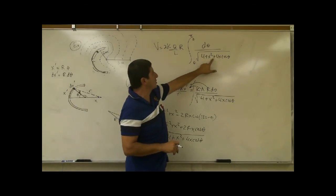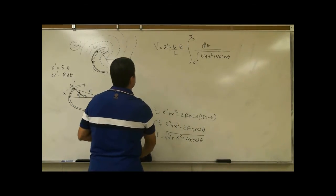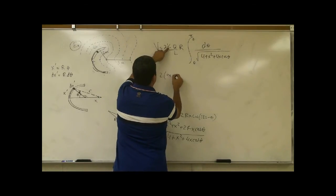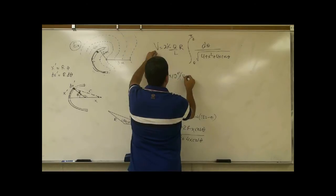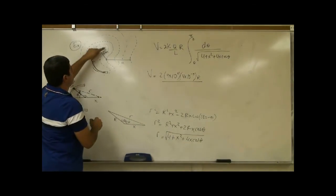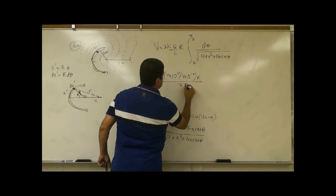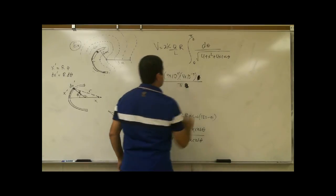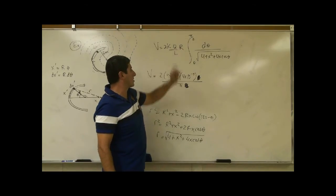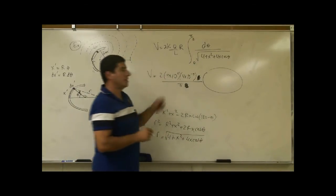For x = 3 meters: substituting into the expression, the constants give 2 × (9×10⁹) × (4×10⁻⁹) / π = 72/π. The integral becomes ∫₀^{π/2} dθ / √(4 + 9 + 12 cos θ) = ∫₀^{π/2} dθ / √(13 + 12 cos θ). The 10⁻⁹ factors cancel, leaving us with 72/π multiplied by the numerical integral.